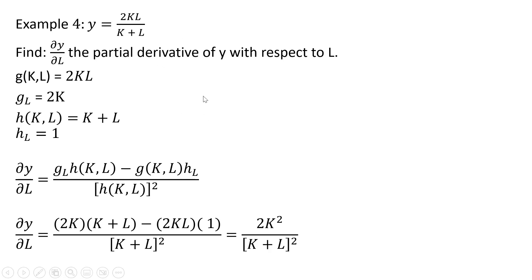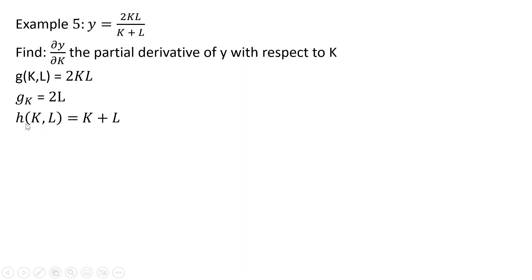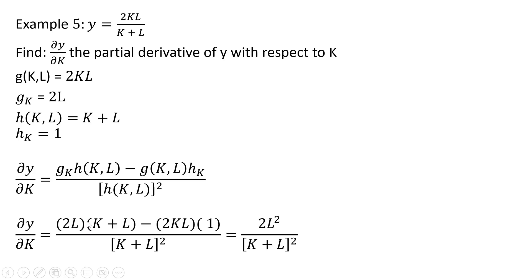Now let's do the other partial derivative. In Example 5, we're going to find the partial derivative of y with respect to k. Here's our g function, a function of k and l — it's just the numerator — and the partial derivative of g with respect to k is 2l. Here is our h function, k plus l, and the partial derivative of h with respect to k is just 1. Making our appropriate substitutions and simplifying a little bit, we get this result.